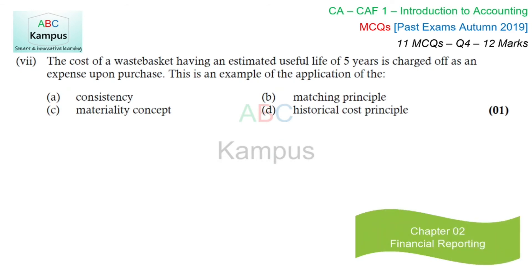Seventh question: the cost of a waste basket having an estimated useful life of five years was charged as an expense upon purchase. Even though its life is five years, it was expensed immediately — which concept did we apply? This concept is called the materiality concept. Under this, items that are important by their size and nature are treated separately with full standard application. For immaterial items, not applying the standard strictly does not affect decision-making — so we are applying the materiality concept here.